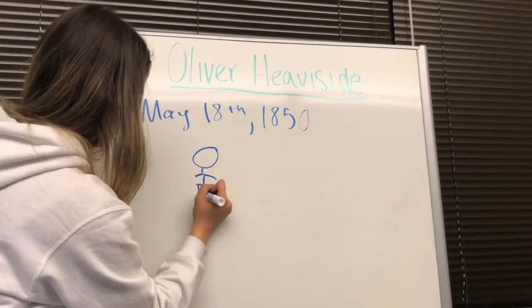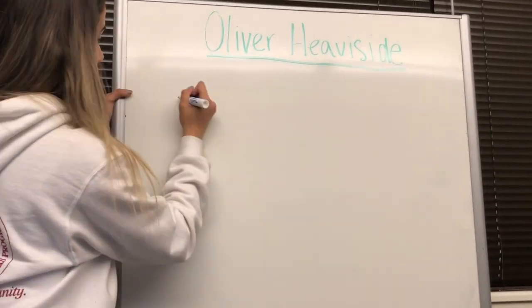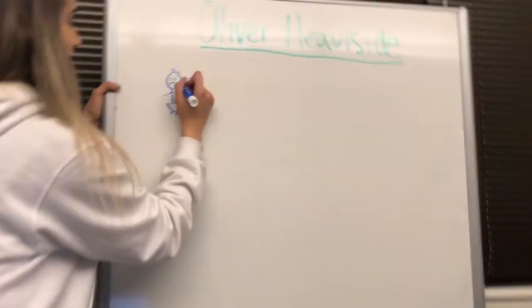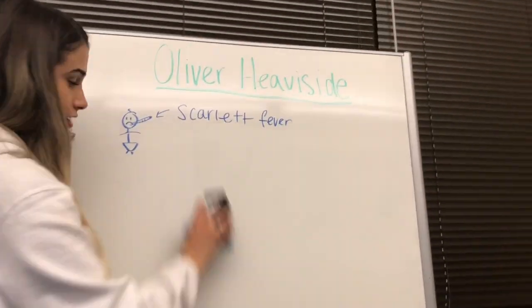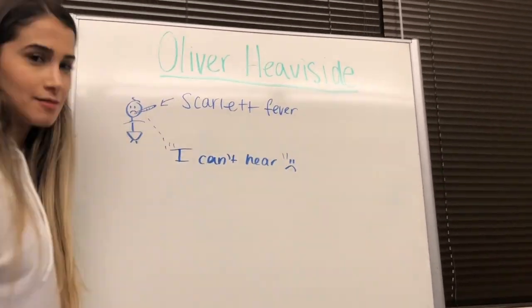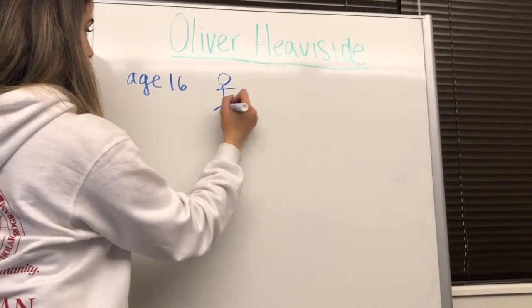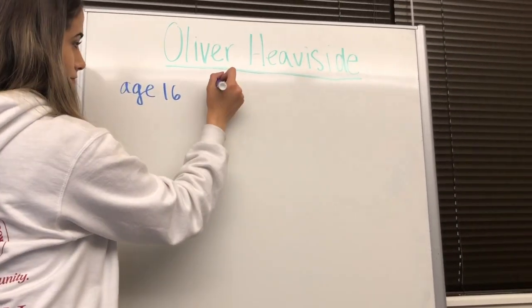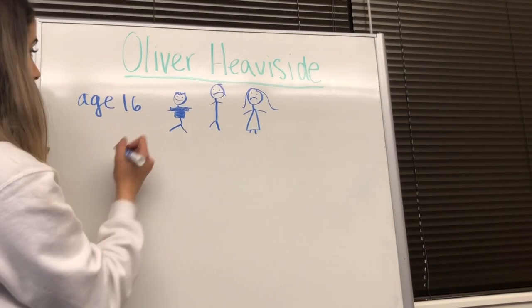Oliver Heaviside was born on May 18, 1850 in Camden Town, London. As a child, he suffered from scarlet fever, which left him with a hearing impairment. After age 16, his parents could no longer send Oliver to school, causing him to study by himself.